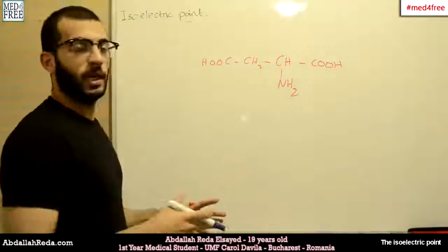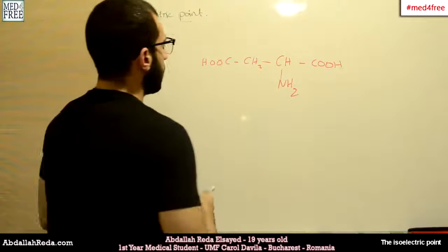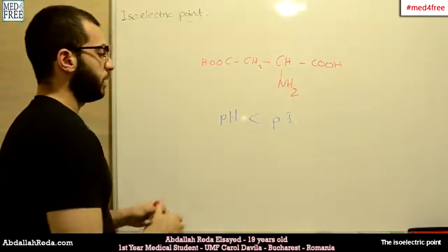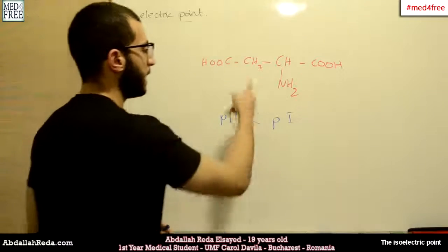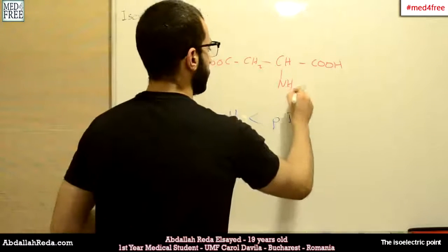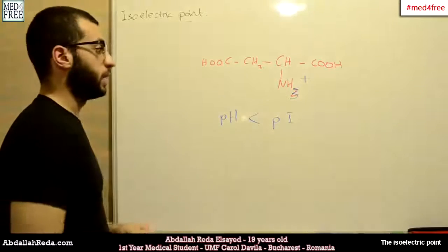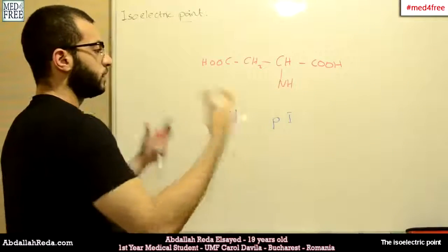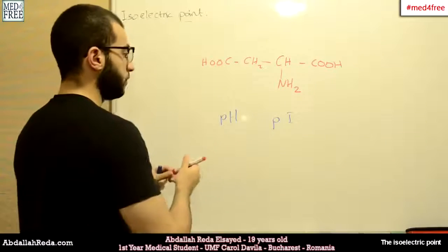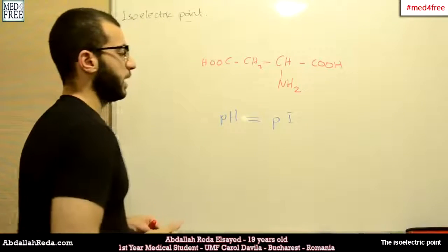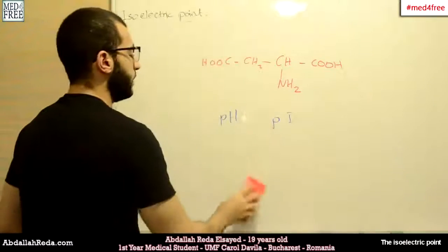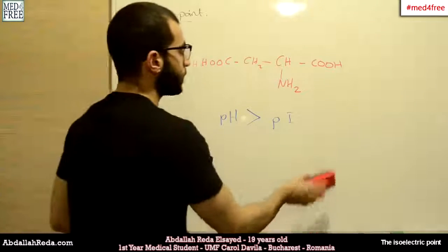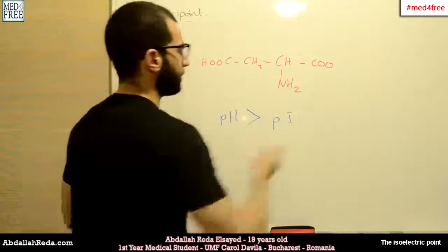Now, what happens throughout the change of pH of the medium surrounding the amino acid? We begin with a pH lower than the PI — at that point the medium is more acidic than the amino acid itself, so it donates a proton to the amino group. Then when pH becomes equal to the PI, the proton is lost and equilibrium occurs. When the pH is higher than the PI, the medium is more basic, which causes one carboxylic group to lose its proton and donate it to the medium.